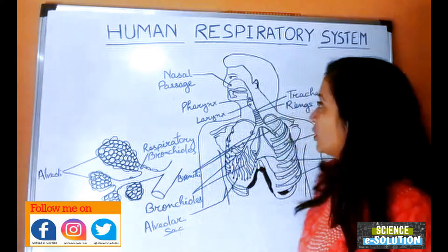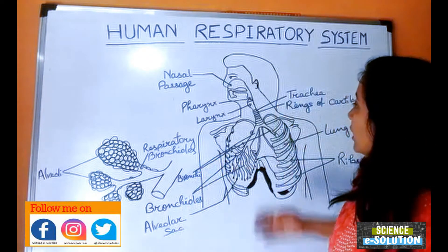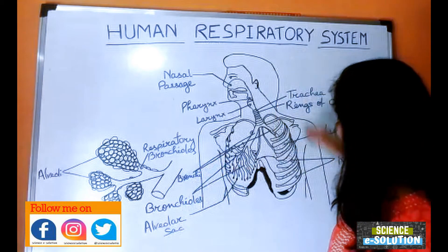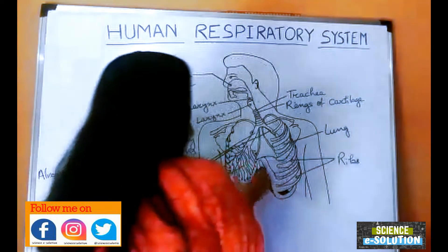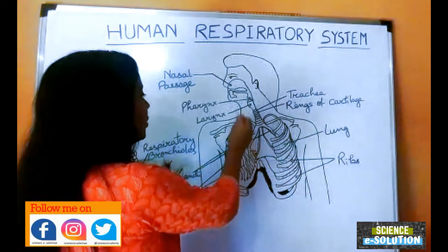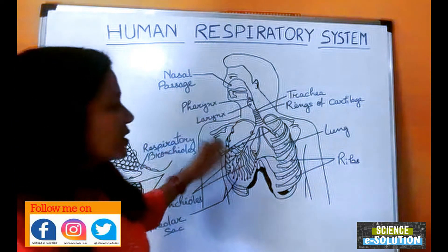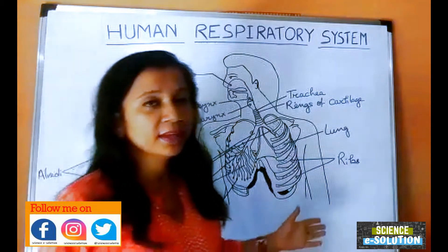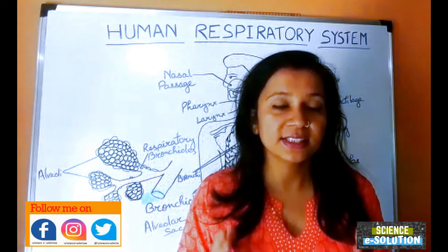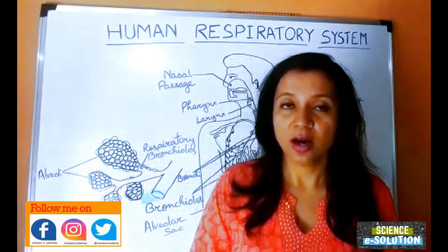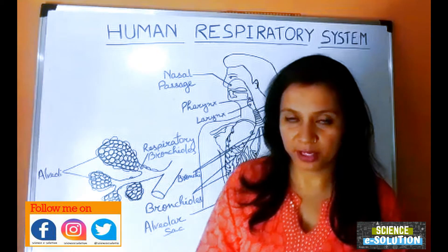Let's get started with the human respiratory system. The human respiratory system consists of lungs, trachea, bronchi, bronchioles, and many other parts. Let us take a look at the different parts one by one.